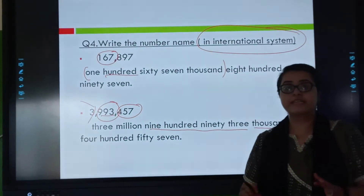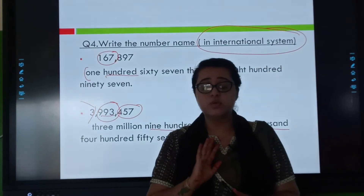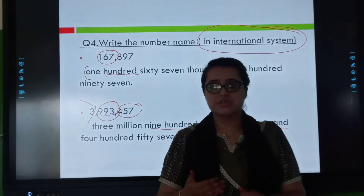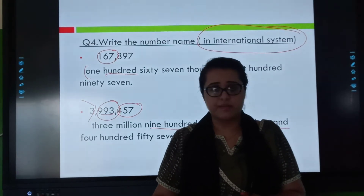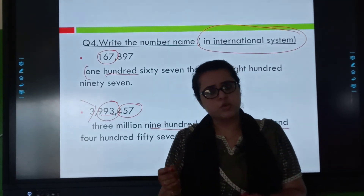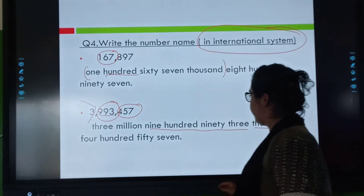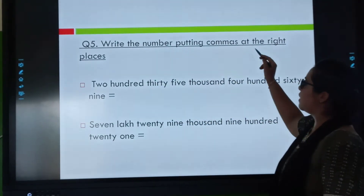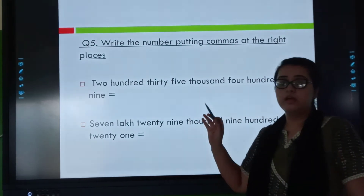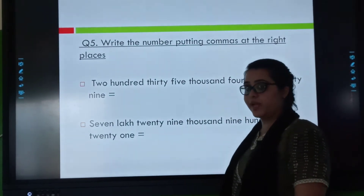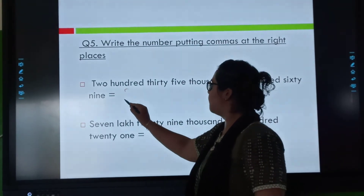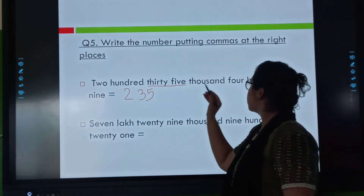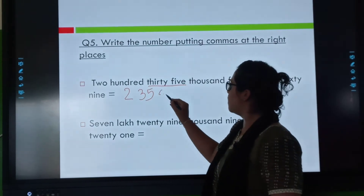I hope this topic is clear. I will be providing you the worksheet as well, so don't worry — it will require practice. You can also start solving questions one, two, three, and four which we have discussed till now in your papers. Now let's do one more question: write the number putting the commas at the right places. Two hundred thirty-five thousand, four hundred sixty-seven.